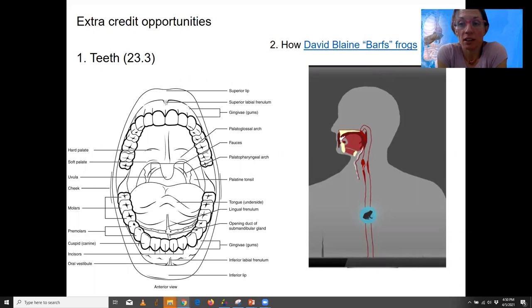Plenty of extra credit opportunities in the mix here. One section I didn't talk about much at all was the whole teeth and tooth, tongue section in 23.3, part of the oral cavity. So that would be an extra credit opportunity.